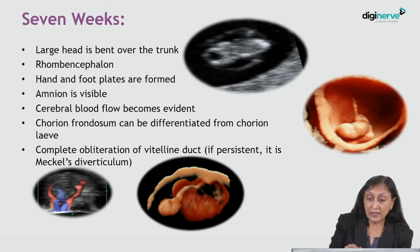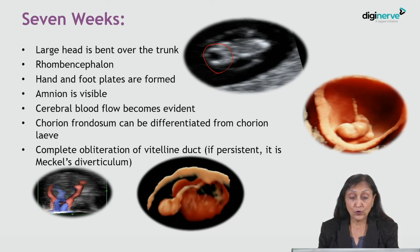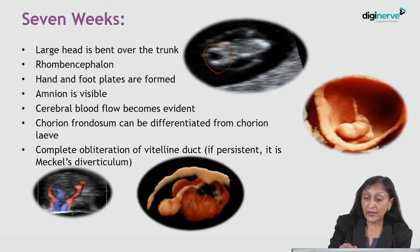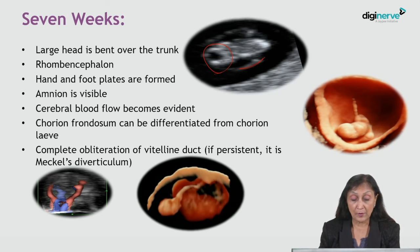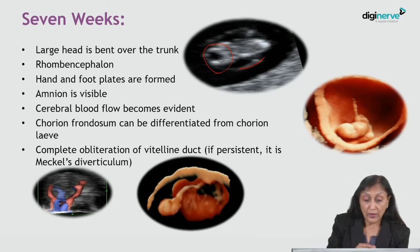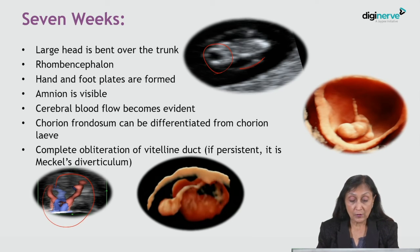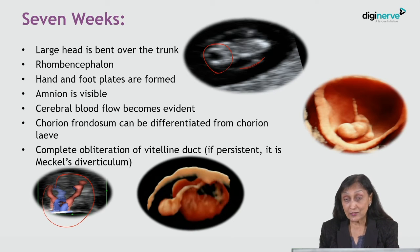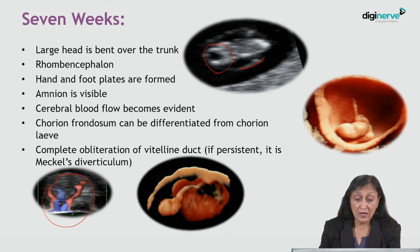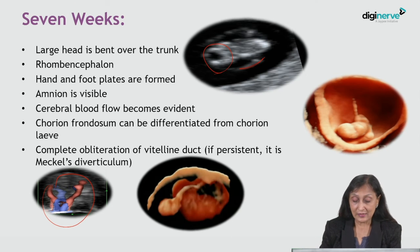At seven weeks, the head is large and bent over the trunk. You can see the rhombencephalon, and the hand and foot plates are formed. The amnion is visible as a faint round line around the embryo, and cerebral blood flow becomes evident. The chorion frondosum can be differentiated from the chorion laeve; it is the chorion laeve which ultimately disappears, while the chorion frondosum develops into the placenta. There is also complete obliteration of the vitelline duct, and if persistent, it may lead to Meckel's diverticulum in later life.